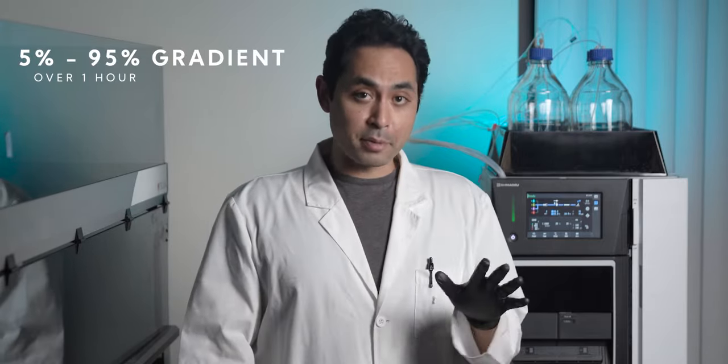You can simply do a gradient after your last run of 5% to 95% over an hour and that should keep things nice and clean. If you don't have a solenoid valve you're just going to have to switch the bottles.